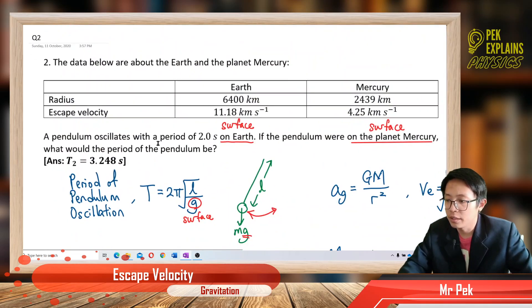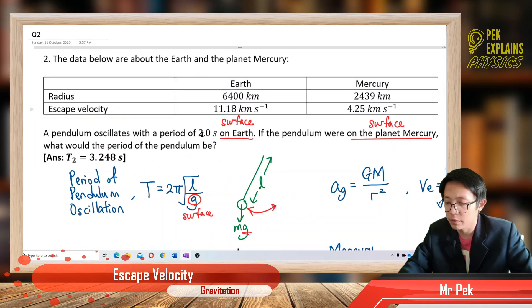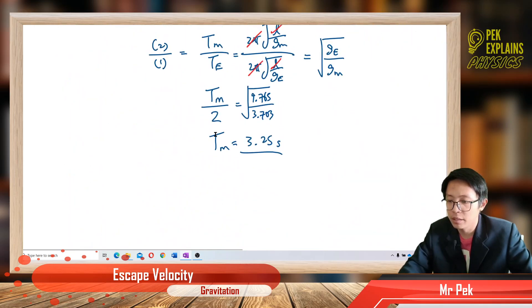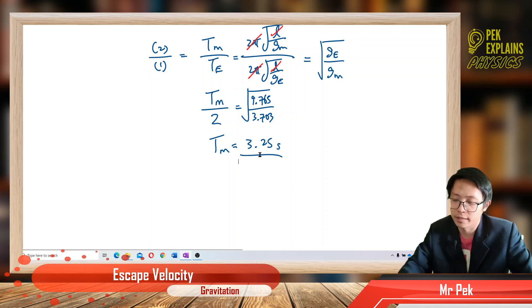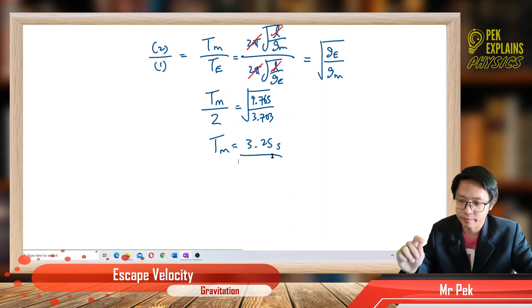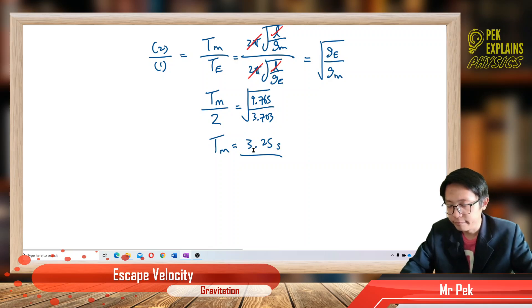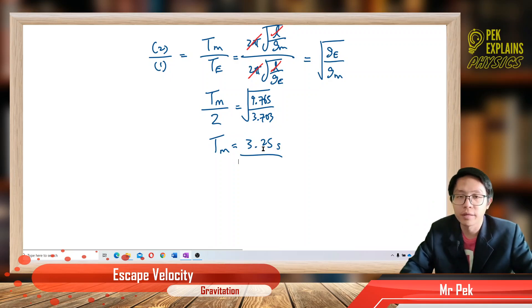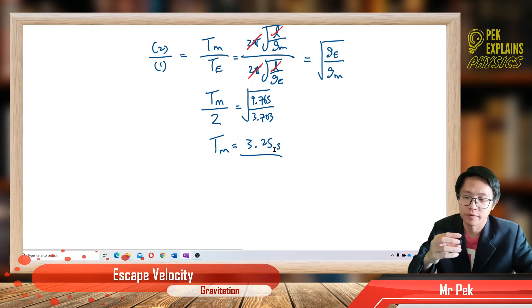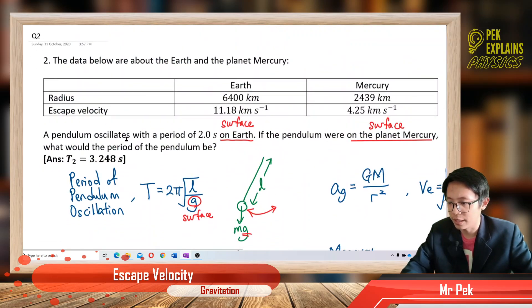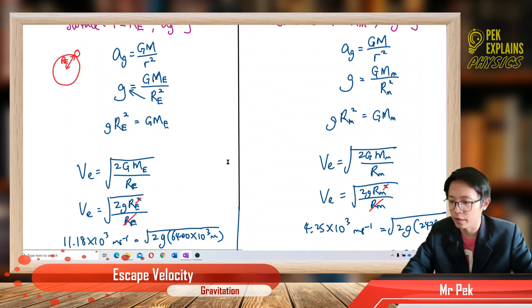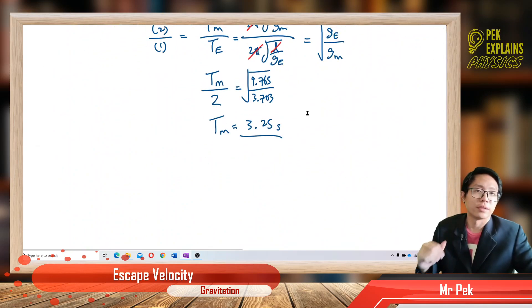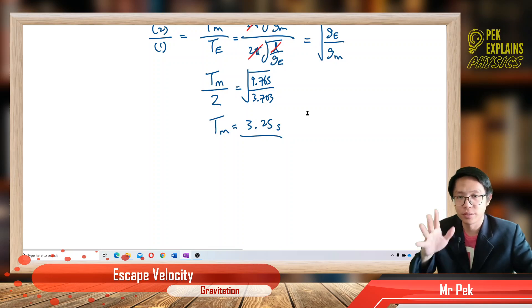The answer is 3.25 seconds. On Earth it oscillates with a period of 2 seconds, but on Mercury it oscillates with 3.25 seconds. That means on Earth it oscillates faster because it has very high gravity, but on Mercury it oscillates slower because it has smaller gravity. The answer is 3.25 seconds. That's how to do it. See you in the next question.